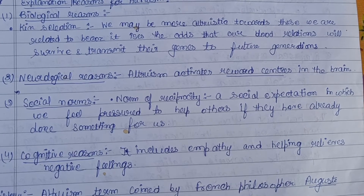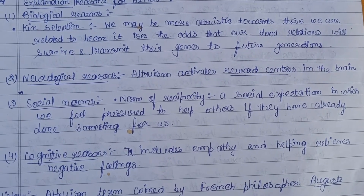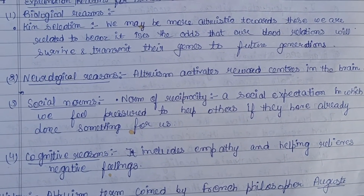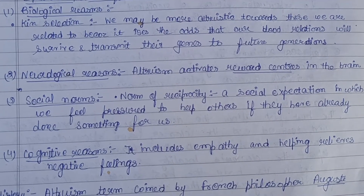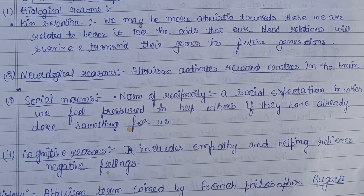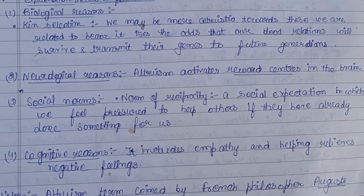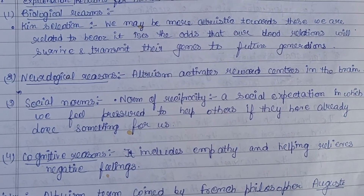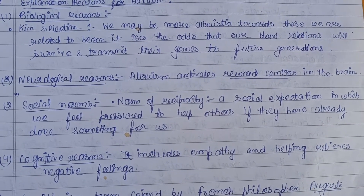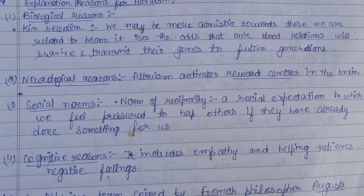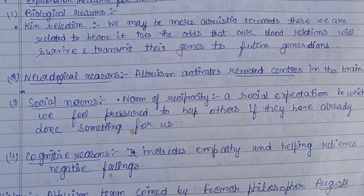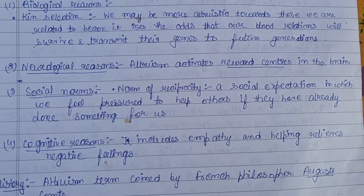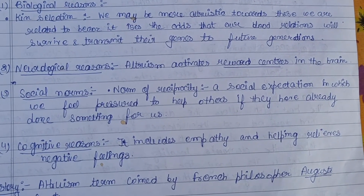The second is the neurological reason: altruism activates reward centers in the brain. In the case of animals also, if they perform an altruistic act, there are chances of receiving a reward in some form. The reward centers in the brain are activated, and as a result the altruistic act is also performed.